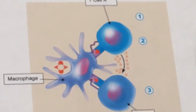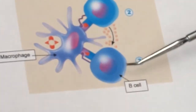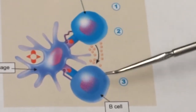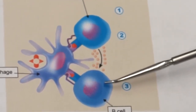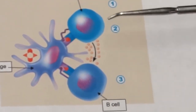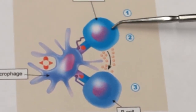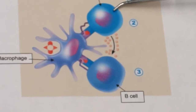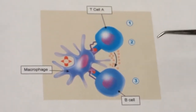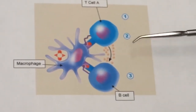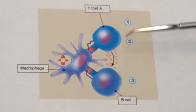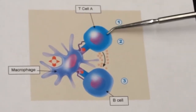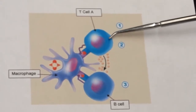A B cell that's been activated could be stimulated by this helper T cell, or another type of T cell that's been activated could be stimulated by this helper T cell. None of these other cells will ever be able to work up to their full potential unless this helper T cell comes and gives them the stimulation that they need.